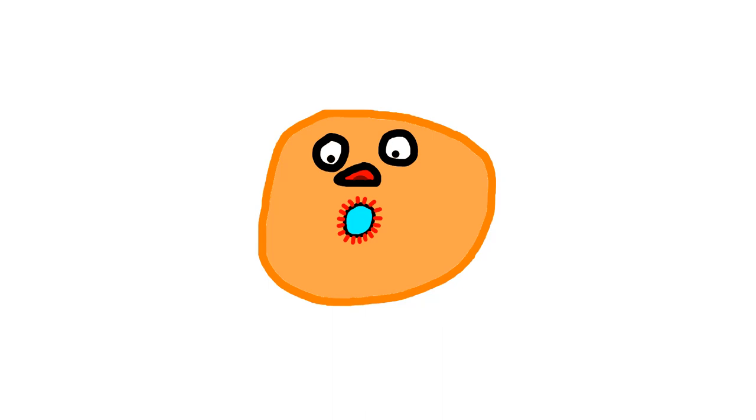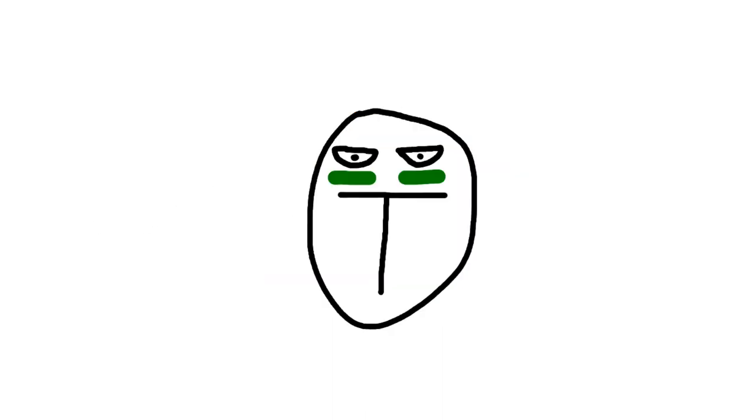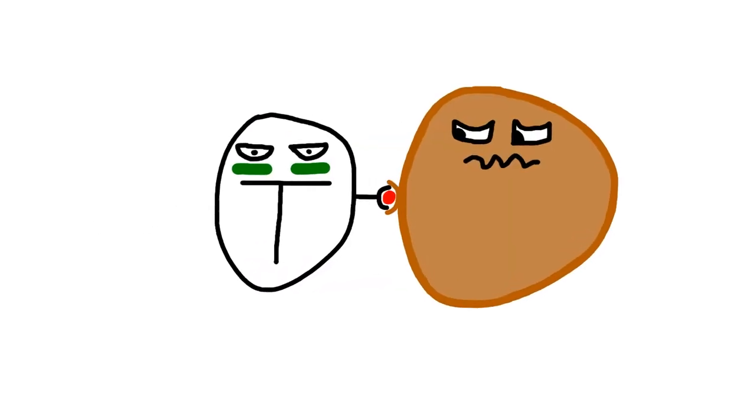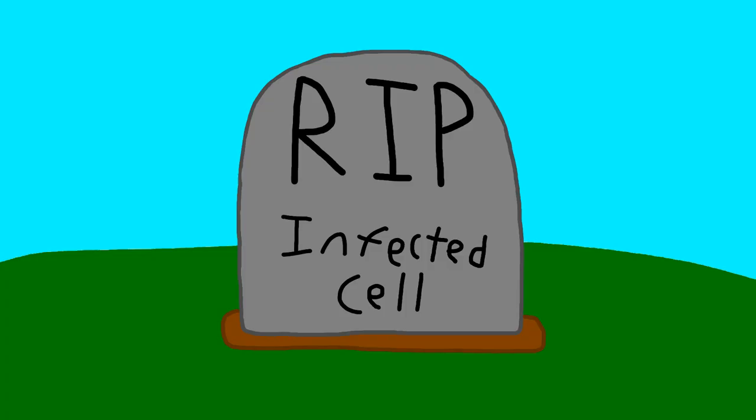For pathogens that live in your cells, the helper T-cells will recruit killer T-cells, which have receptors that bind to antigens presented by your infected cells, and then release signals that kill the infected cells.